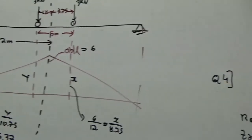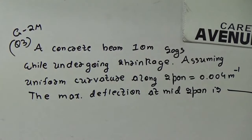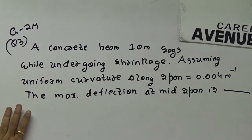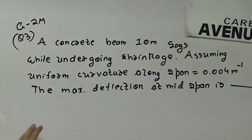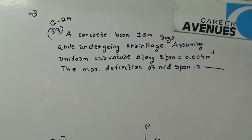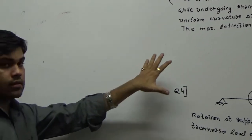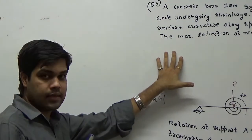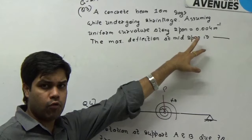The next problem is quite interesting. There is a concrete beam of 10 meter — a simply supported beam which is sagging due to shrinkage. This involves RCC concepts where internal stresses are generated due to shrinkage, creep, or relaxation, but structural analysis is applied here. Because of the shrinkage, this beam is sagging with a deflection profile like this.